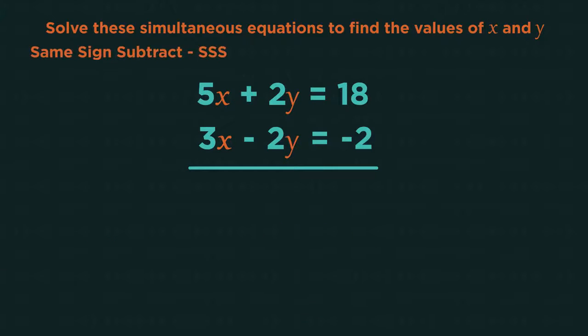Here the signs are different. This one is plus 2y and the other is minus 2y. So we add the two equations. 5x add 3x is 8x. Plus 2y add minus 2y is 0. So we've eliminated the y's.